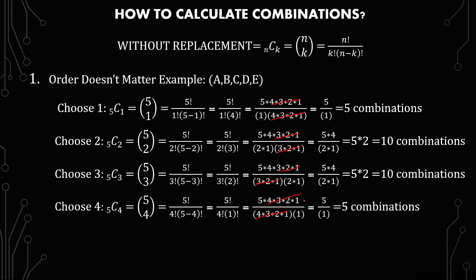You can notice now that there's a symmetry: it peaks between 2 and 3 and then goes back down. If you choose 0 — 5 choose 0 — you get 1 combination, and 5 choose 5 also gives 1 combination. This looks a lot like the normal distribution, and it's helpful to understand that because it's also called the binomial coefficient. The binomial distribution, when you get high enough, looks like a normal distribution.